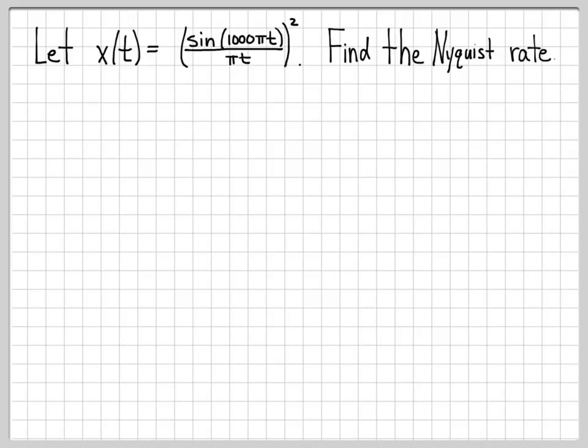We're going to do the exact same thing we've been doing on these problems. We're going to find the Nyquist rate of the signal. Finding the Nyquist rate boils down to finding the maximum frequency component of the signal and then multiplying by 2. So we have x(t) equals sine a thousand pi t over pi t squared.